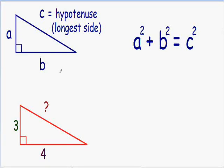Welcome to my video on the Pythagorean Theorem. The Pythagorean Theorem can be used to find the lengths of all the sides of a right triangle. Notice how I said it can only be used in a right triangle.